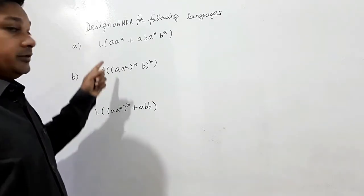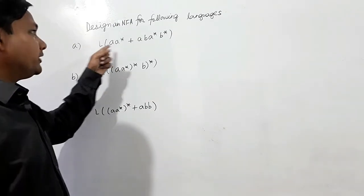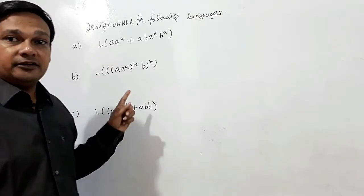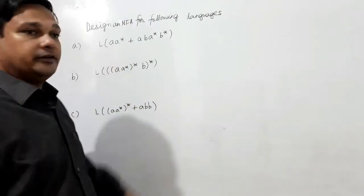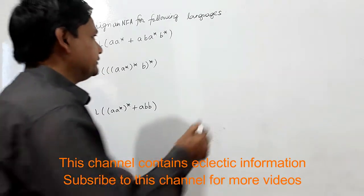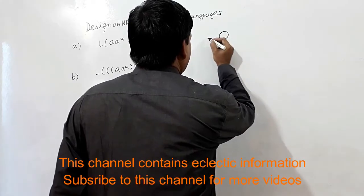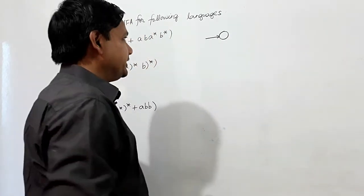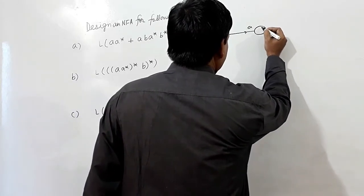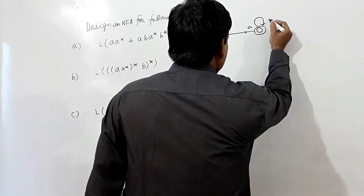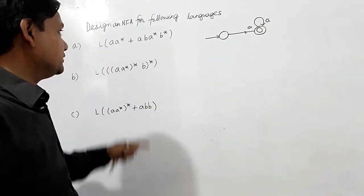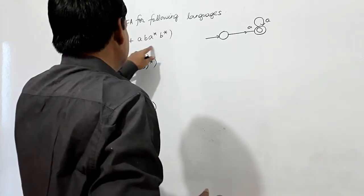Some regular expressions are given and we have to design an NFA for these regular expressions. For the first regular expression, a·a*, if a* is there then the NFA for a* will be this — this is a, and this is a*. This is an NFA for a*, and for this regular expression a·a*.